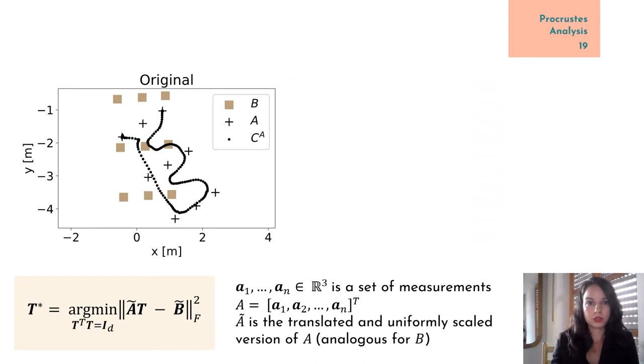To align all measurements to the room's coordinate system, we'll use Procrustes analysis, which finds the optimal linear transformation between two sets of points from different coordinate systems.